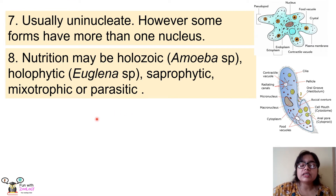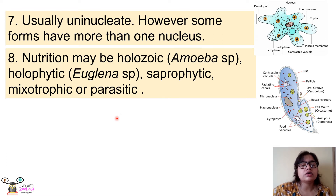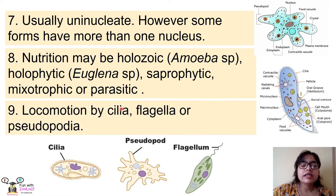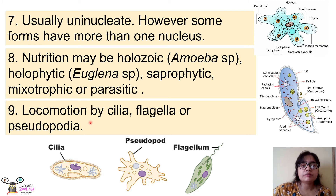The body in which parasitic protozoans live is called the host. These protozoans derive nutrition from the host's body — as a result, the protozoans are benefited but the host does not get proper nutrition. These are all the different modes of nutrition found in protozoans.